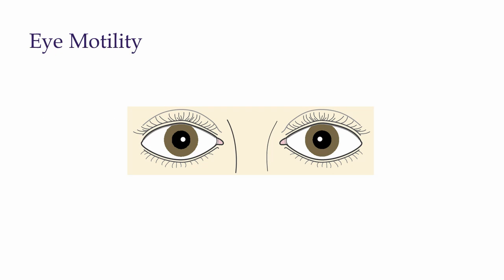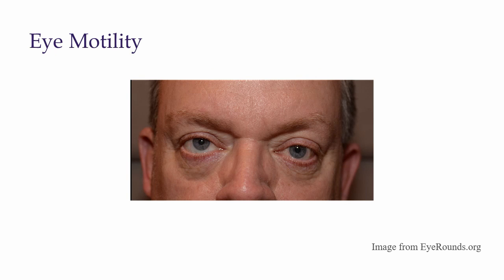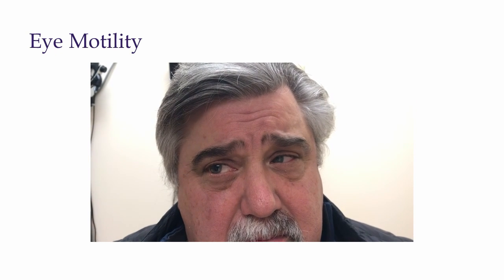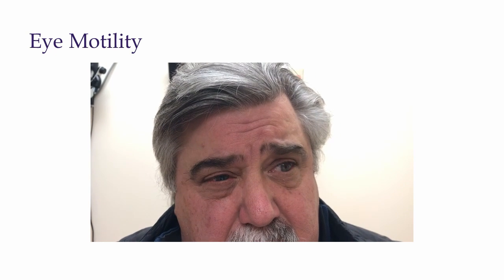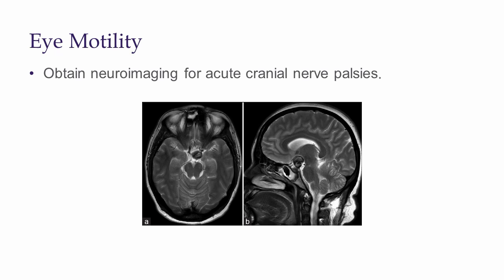You can also use a penlight to check for ocular alignment by looking for a symmetric corneal light reflex — this is known as a Hirschberg test. A normal corneal light reflex appears slightly medial to the center of the pupil in both eyes. Misalignment will cause a displaced corneal light reflex in the affected eye. Patients with cardiovascular risk factors may develop a fourth or sixth nerve palsy. For a sixth nerve palsy, the corneal light reflex is displaced temporally, while in a fourth nerve palsy it is displaced inferiorly due to the resultant hypertropia. Patients with a fourth nerve palsy will also have a head tilt in the opposite direction of the affected side. In this video, we see a patient with a right third nerve palsy who is unable to adduct his right eye; the fixed dilated pupil is indicative of a compressive third nerve palsy. Neuroimaging is recommended for patients presenting with acute cranial nerve palsies.